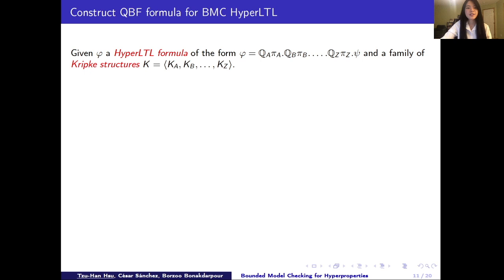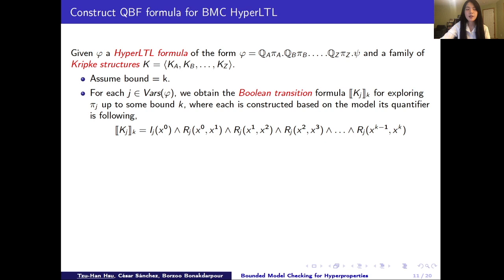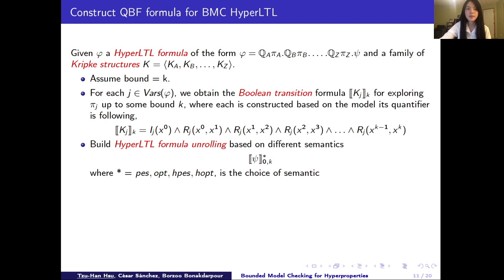Next, we introduce the detail of how we build the QBF formula whose satisfaction results can infer the answer of the model checking problem. Given a hyperLTL formula phi and a family of Kripke structure k because as we mentioned earlier, we allow quantifiers to range over different models. So assume bound is k, we obtain a boolean transition formula for each quantifier in order to explore the trace variables that is quantifying. And then we encode the hyperLTL formula by unrolling it based on the temporal logic, also based on different semantics that we choose for this formula.